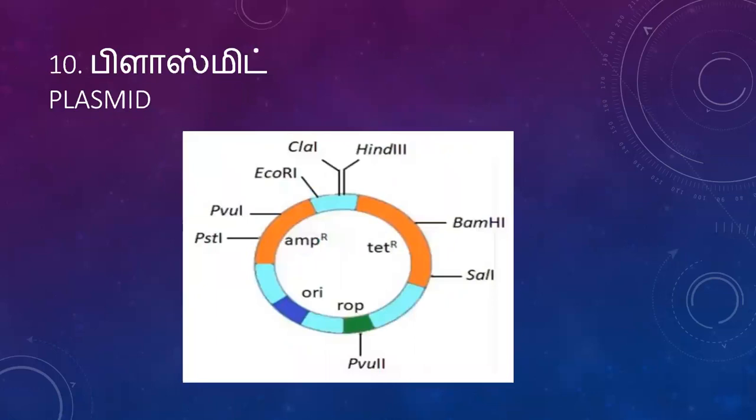Then plasmid — the non-genomic DNA or extra-circular DNA present in the cytoplasm of bacteria. PBR plasmid.